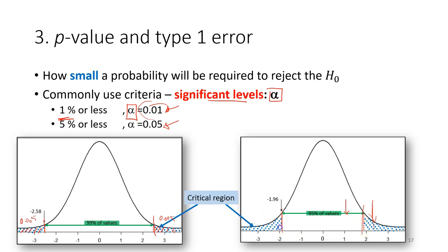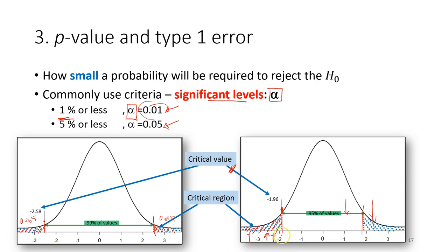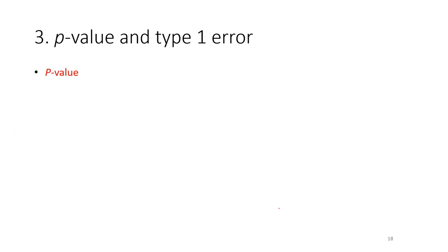The region where a value falls in the extreme tail — for example, if the value is 4 — is called the critical region, and we reject the null hypothesis. The boundary value that defines this region is called the critical value, which in this case is 1.96.